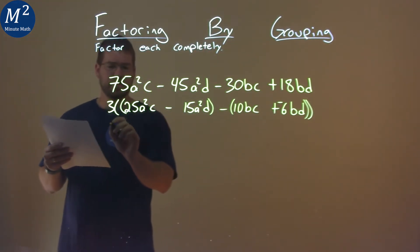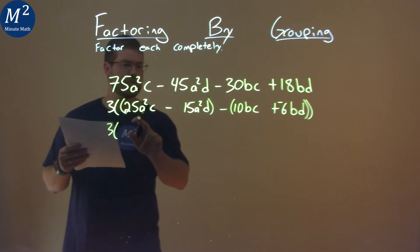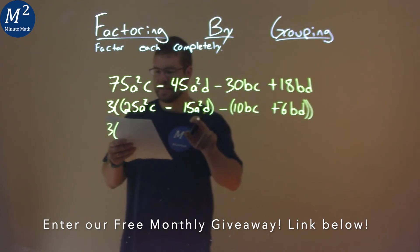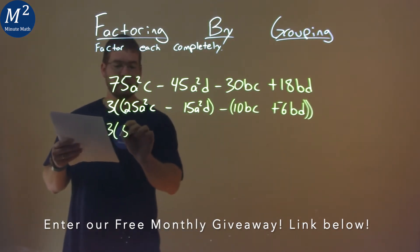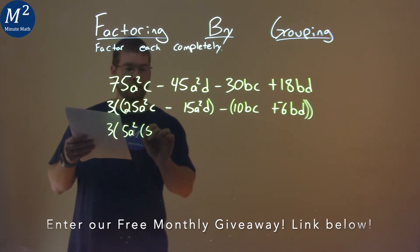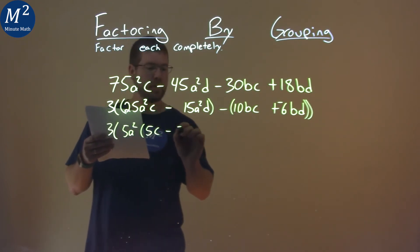Now from here, let's pull out what's a common term in 25a²c - 15a²d. That's 5a² in both parts. By pulling that out, I'm left with 5c - 3d.